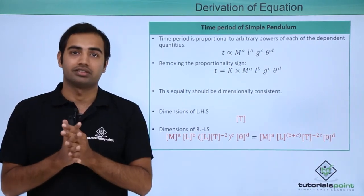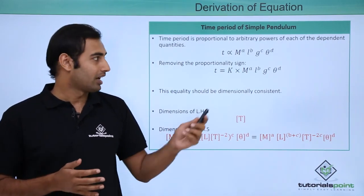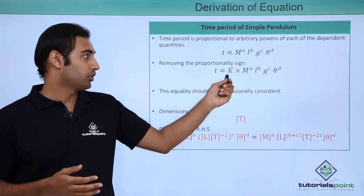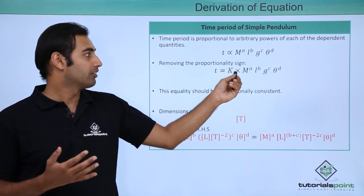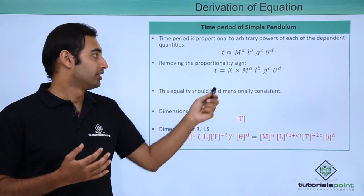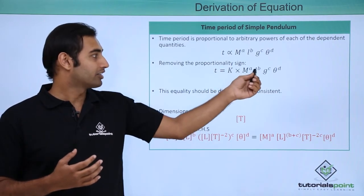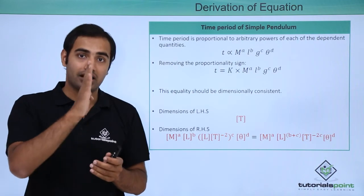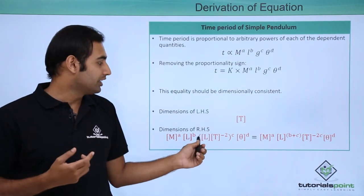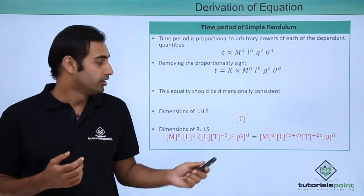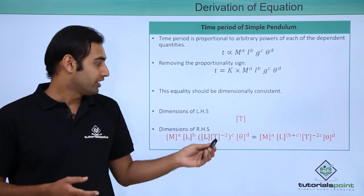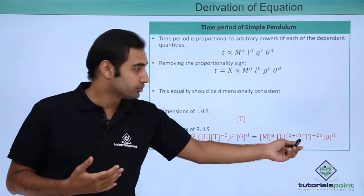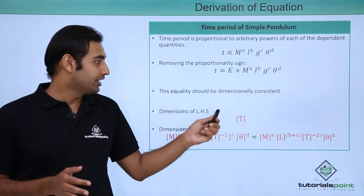For this equation to be dimensionally consistent, the dimensions on the LHS and RHS must be exactly equal to each other. The dimensions of the LHS is simply the dimensions of time T. The dimensions of the RHS is the product of dimensions of all the quantities: mass raised to power a has dimension M raised to power a; length raised to power b has dimension L raised to power b; gravitational acceleration raised to power c has dimensions L T raised to power minus 2, whole raised to power c; and finally temperature raised to power d gives theta raised to power d. Opening the brackets and rearranging, I get M raised to power a, into L raised to power b plus c, into T raised to power minus 2c, and theta raised to power d.